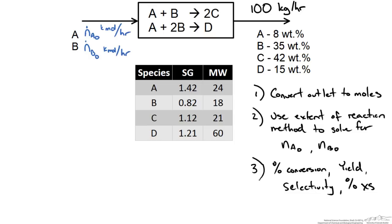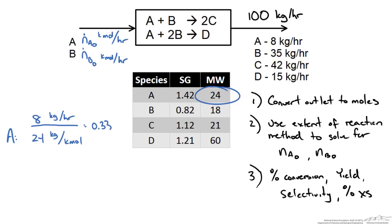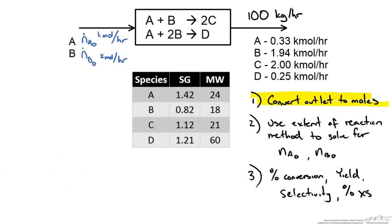The first step is to convert our outlet composition into molar flow rates. We take each species and multiply by our mass flow rate of 100 kg per hour to get each individual species mass flow rate. For instance, 8 weight percent of 100 kg is 8 kg per hour of A. We then divide by the molecular weight — for A that is 24 kg per kilomole — giving 0.33 kilomoles per hour of A. We repeat this for B, C, and D, and plug those values into our schematic, completing step one.